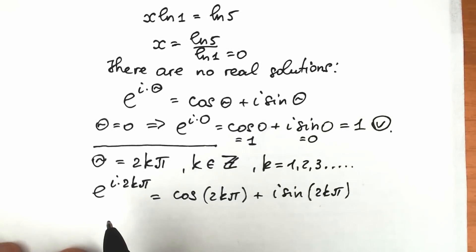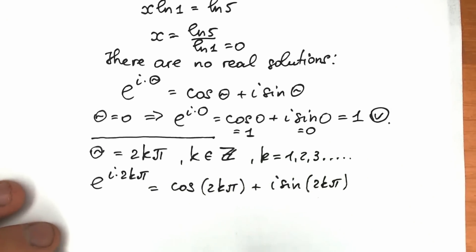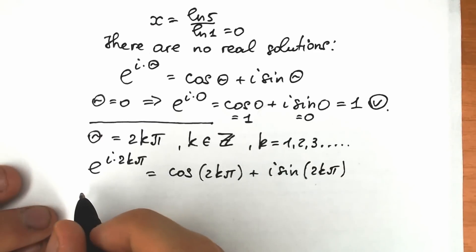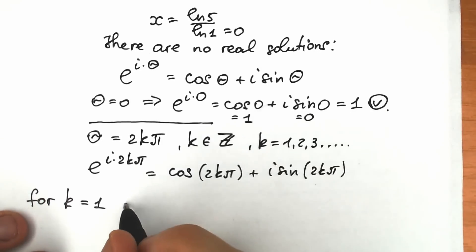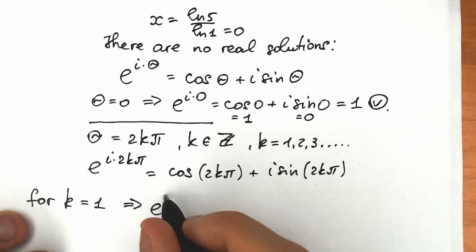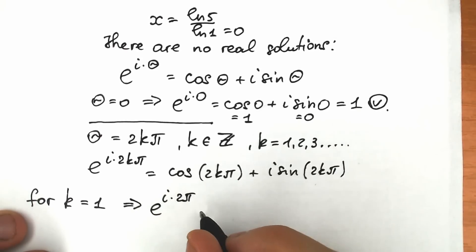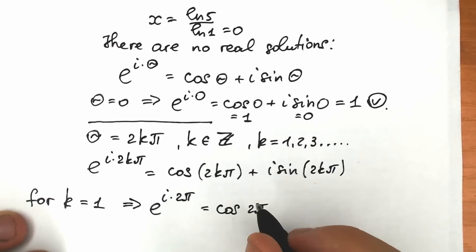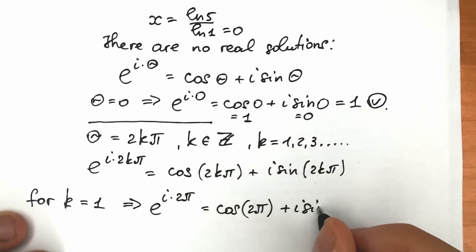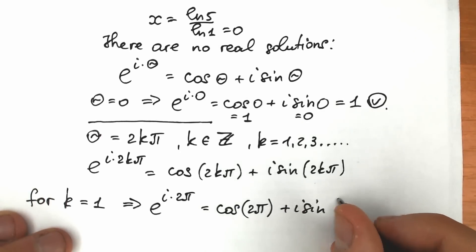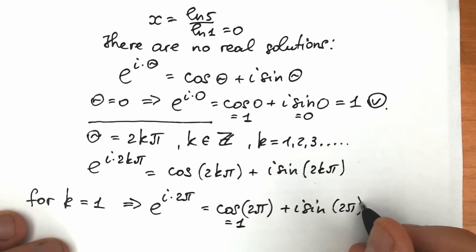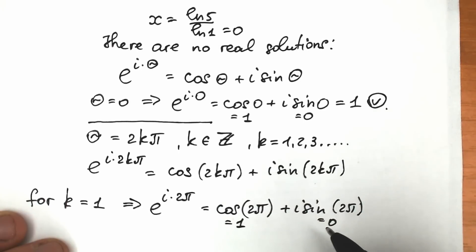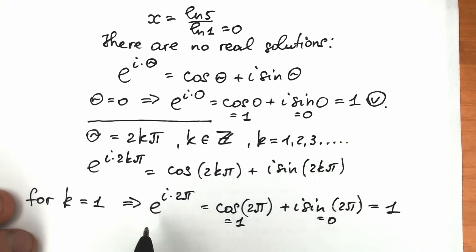This is the expression we really need. Let's look at it in terms of different values of k. For k equal to 1: e to the power i times 2 times 1 times pi equals cosine 2 pi plus i sine 2 pi. The key moment here is that cosine 2k pi equals 1 always — this is the period — and sine 2k pi equals 0 always. So i times 0 is 0, and as a result the left side equals 1. When k equals 1, this expression equals 1.